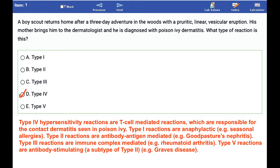The correct answer is D, type IV. Hypersensitivity refers to undesirable reactions produced by the normal immune system, including allergies and autoimmunity. They are usually referred to as an overreaction of the immune system. Type IV hypersensitivity reactions are T-cell mediated reactions, which are responsible for the contact dermatitis seen in poison ivy.